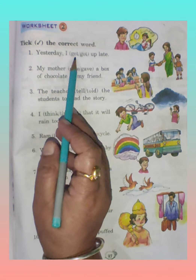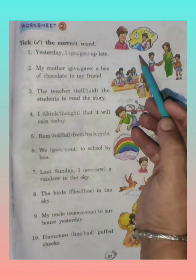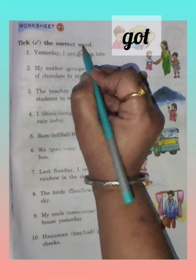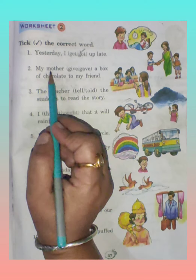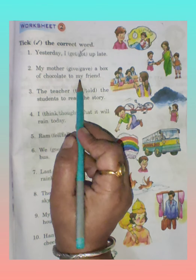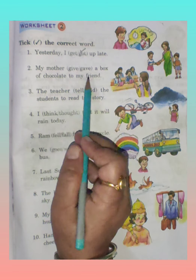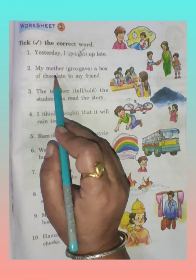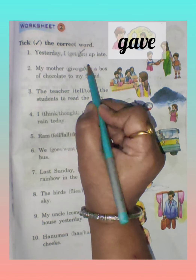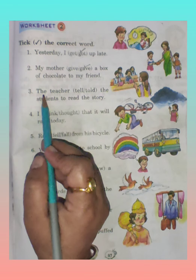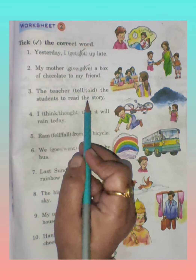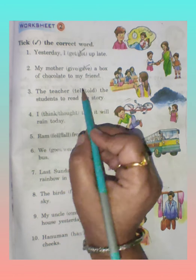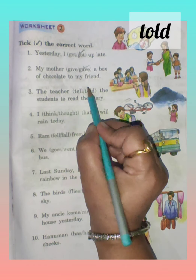First: Yesterday I get / got a plate. We are talking about yesterday, which is past, so we tick 'got' — 'get' is present and 'got' is past. Second: My mother give / gave a box of chocolate to my friend. This is about past time, so 'give' is present and 'gave' is past — tick 'gave.' Third: The teacher tell / told the students to read the story. 'Tell' is present and 'told' is past — tick 'told.' Fourth: I think / thought that it will rain today. 'Think' is present and 'thought' is past — tick 'thought.'